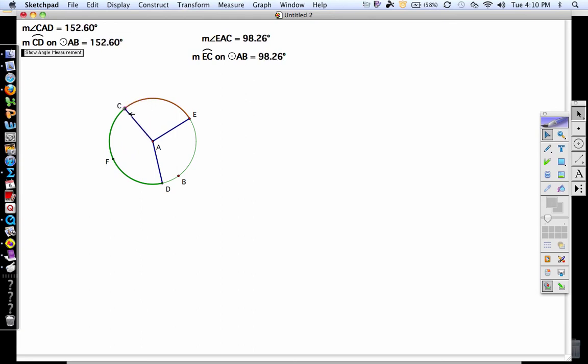If I look at the red, arc CE is a minor arc. I would have to call it CFE to be the major arc, to go this direction. So if it's bigger than 180, it's a major arc.